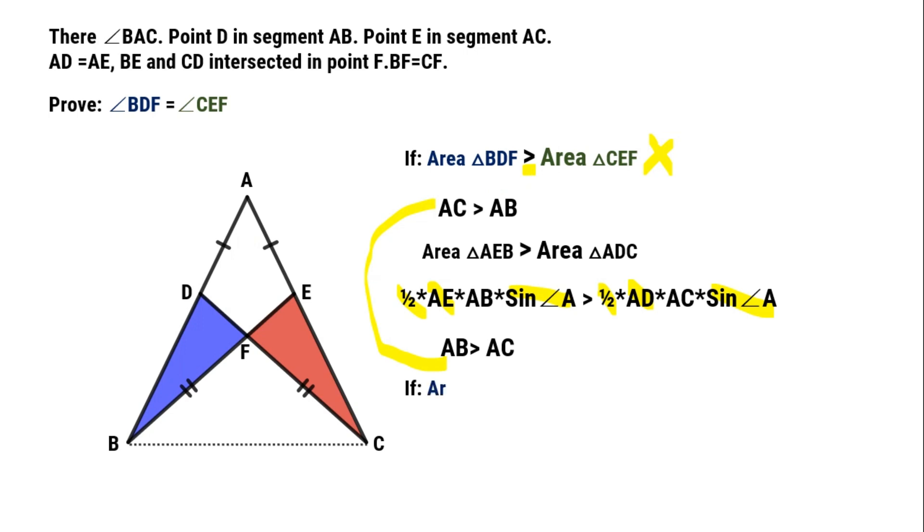If area of triangle BDF, smaller than triangle CEF, in same way, we can prove it's not true. So the area of triangle BDF, should equal to triangle CEF.